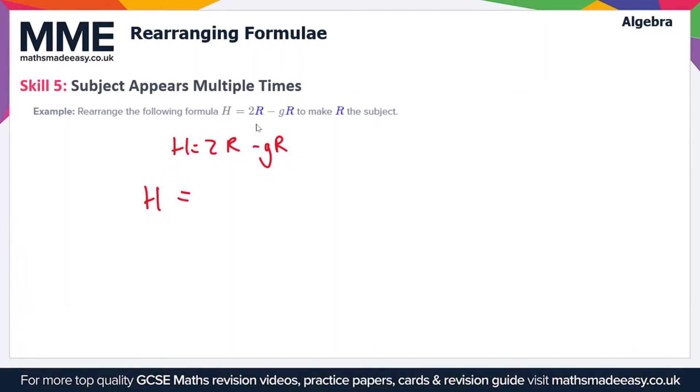What we're going to have to do first of all is factorize the expression because this right-hand side of the equation has two terms which contain an R. We can take out a common factor of R and write it outside the brackets, and then we're left with 2 - g inside the brackets.